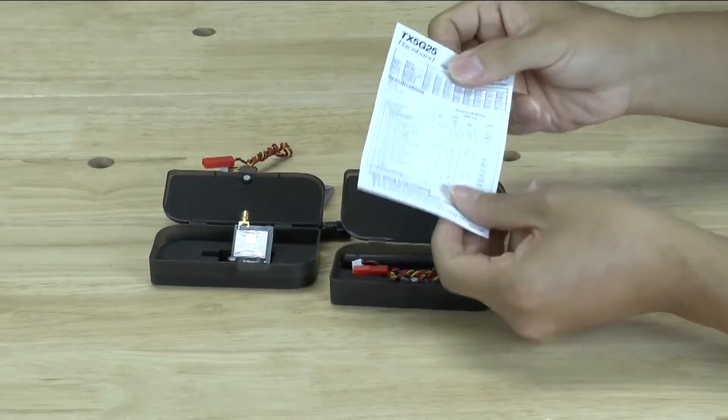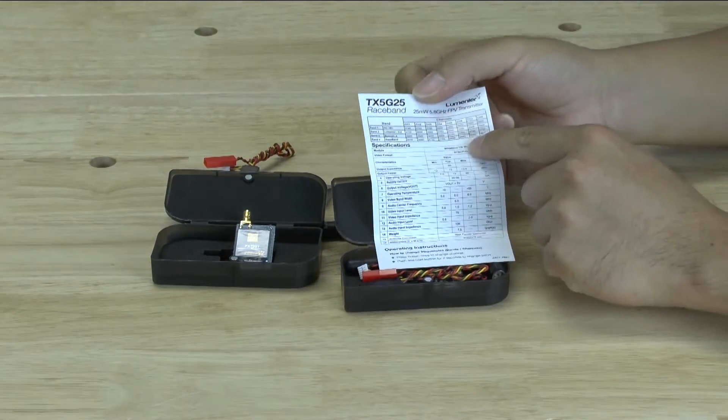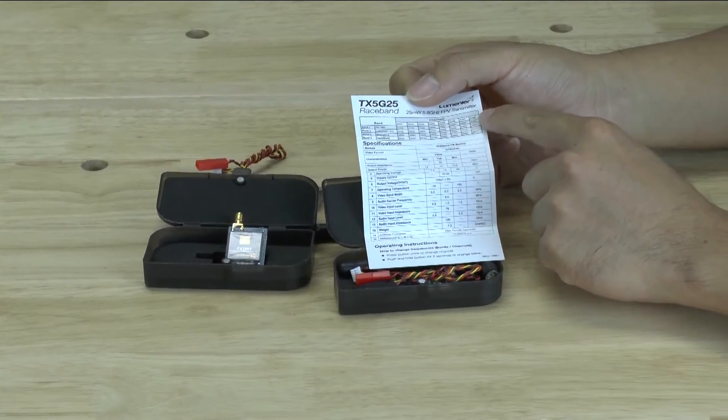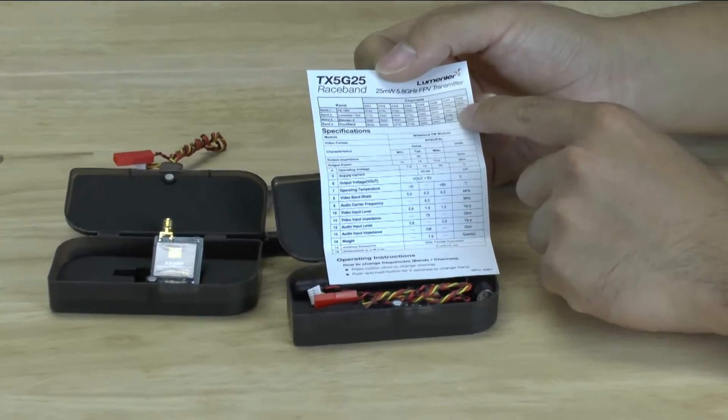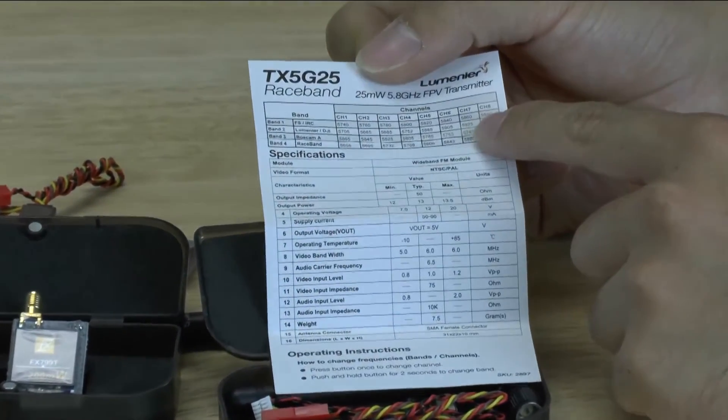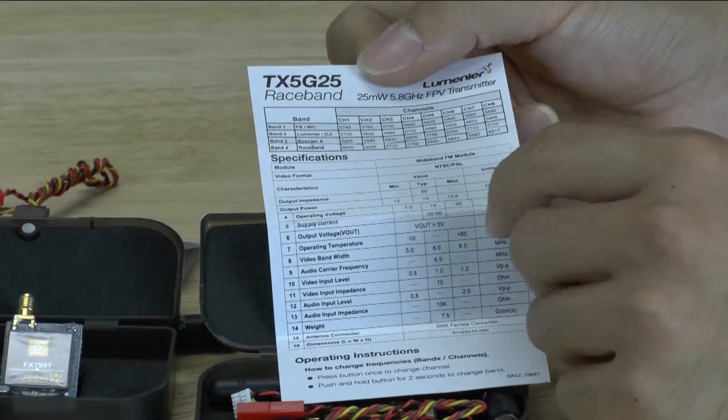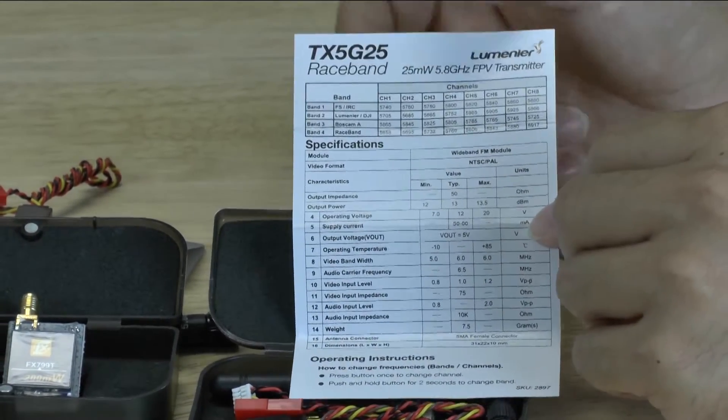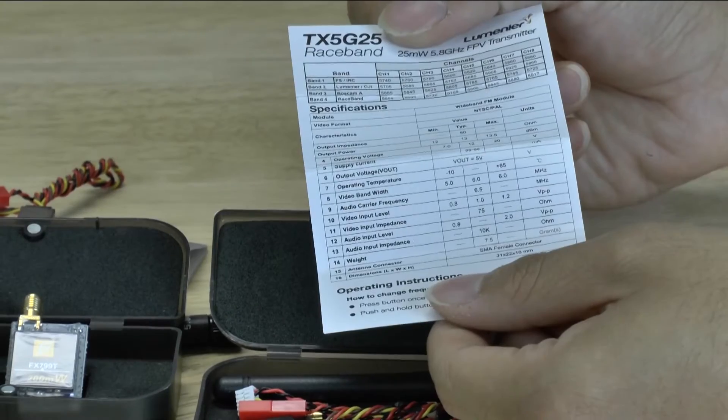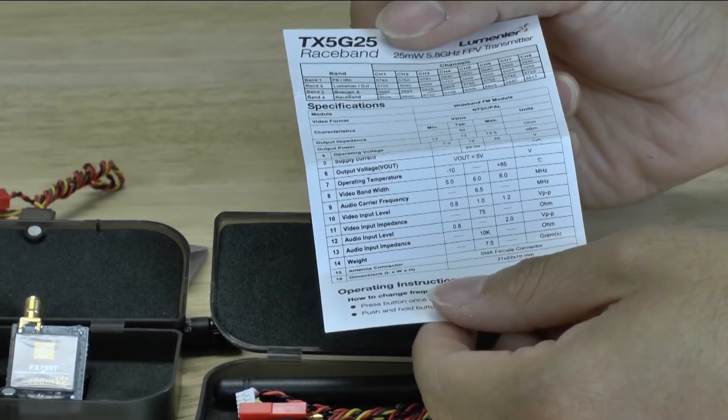The instruction book is a little different. This one's Lumineer-specific. You'll notice up here that they have 32 channels. They actually cut out one of the channels to add the race band channels. So instead of having 40 channels, they have 32 channels. But they sacrifice one of the bands in order to do that.